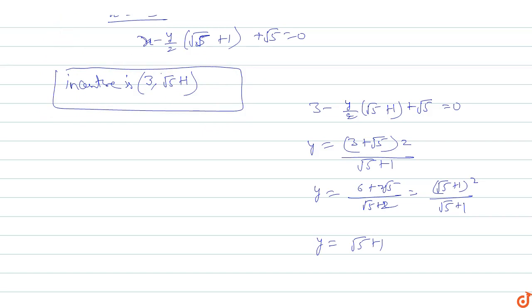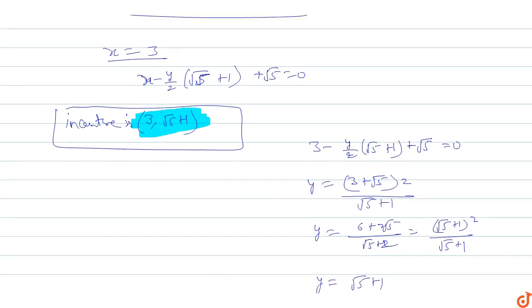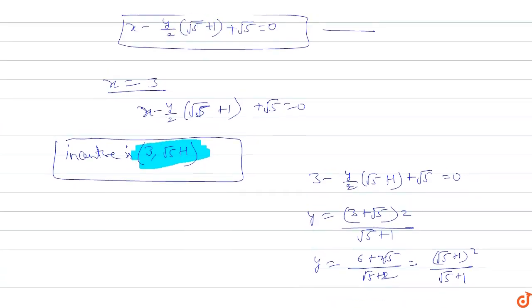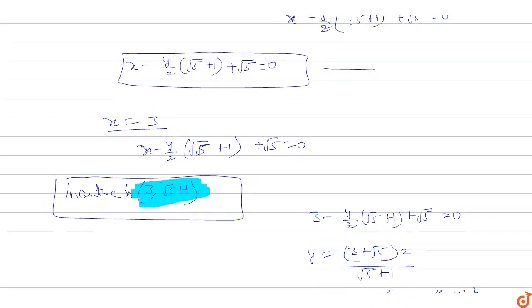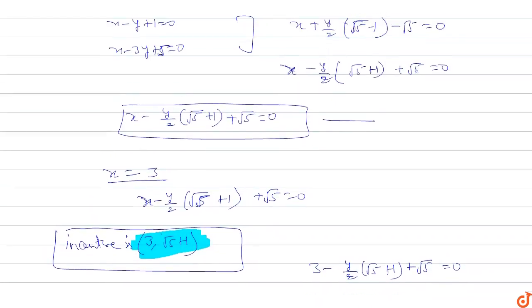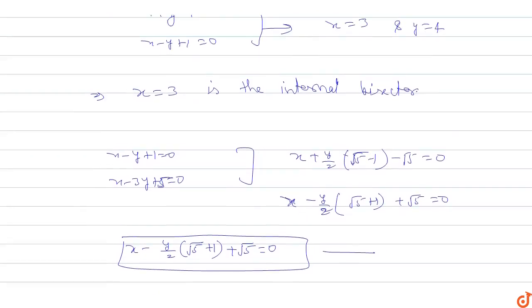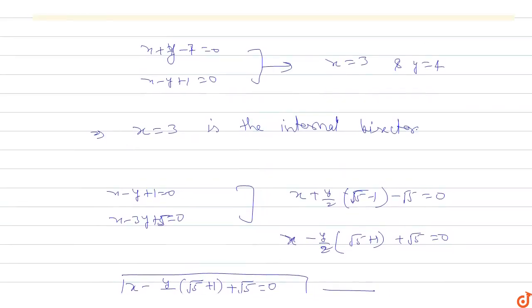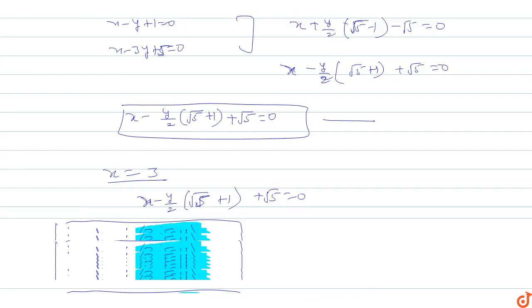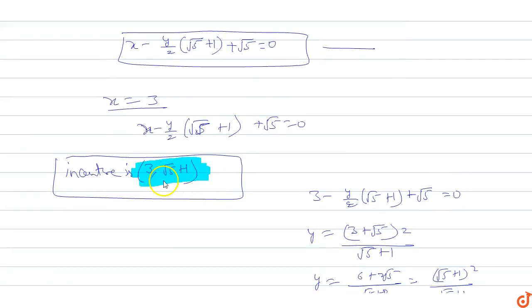So the incenter of the triangle formed by the lines x + y - 7 = 0, x - y + 1 = 0, and x - 3y + 5 = 0 is equal to (3, √5 + 1). That is our final answer.